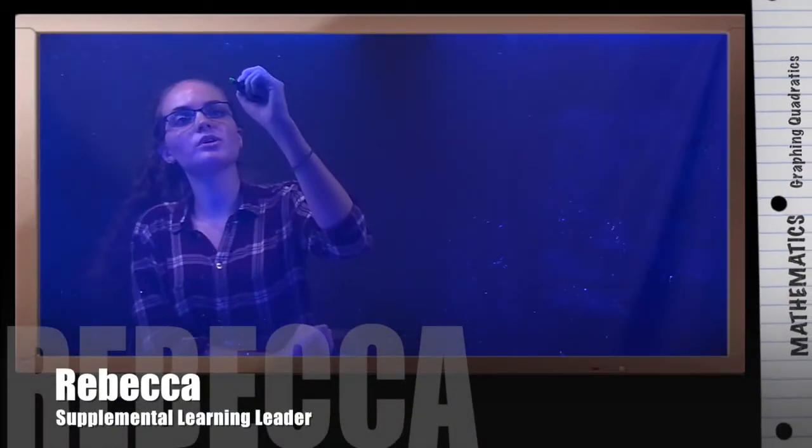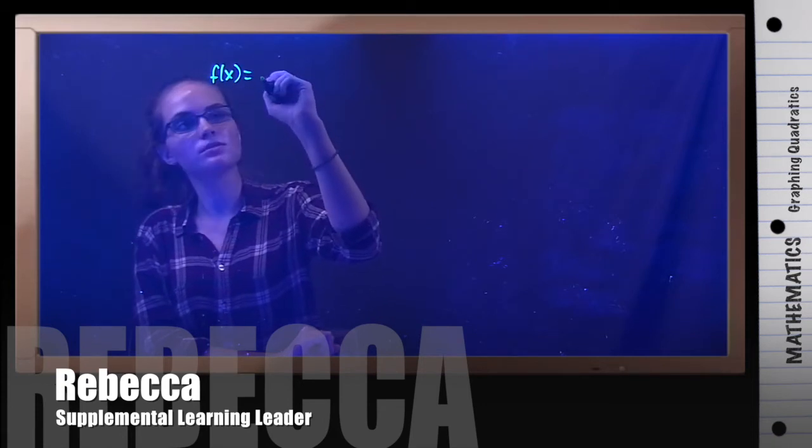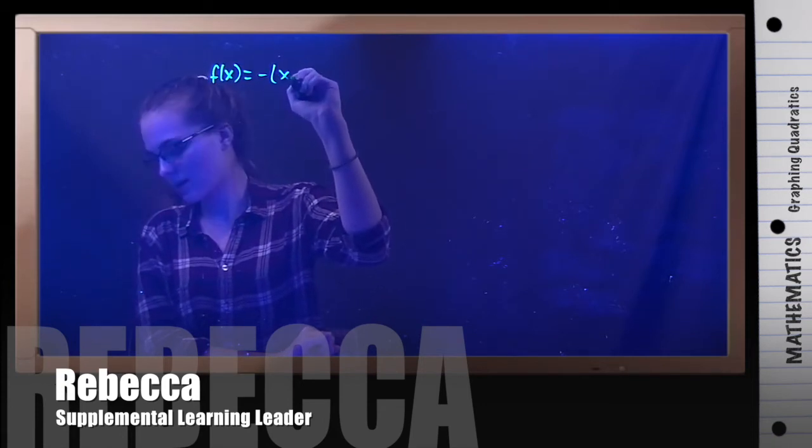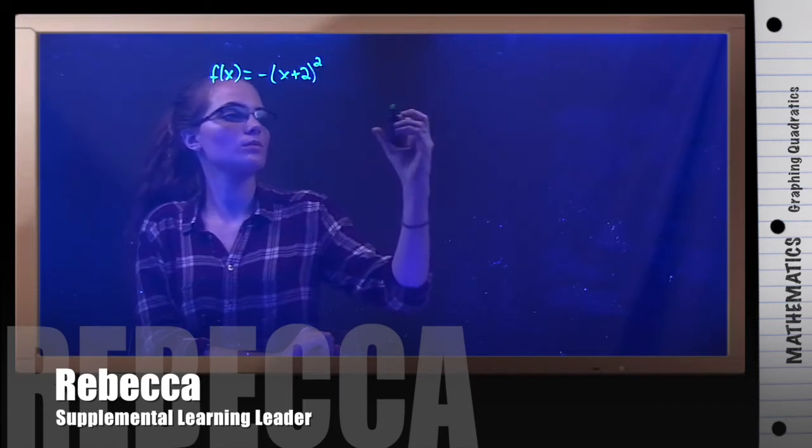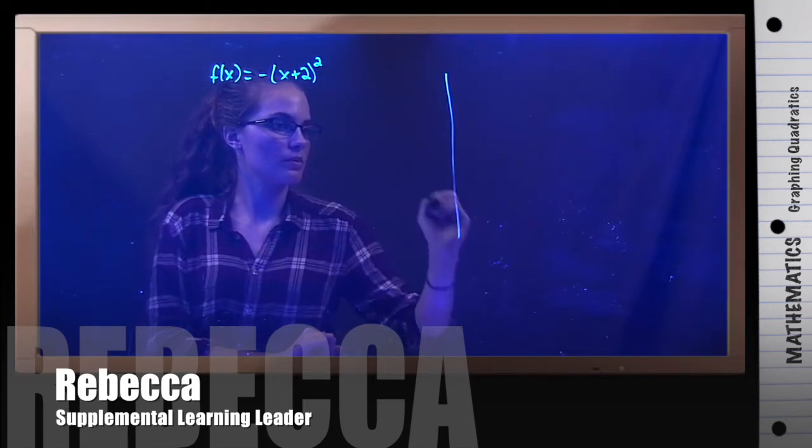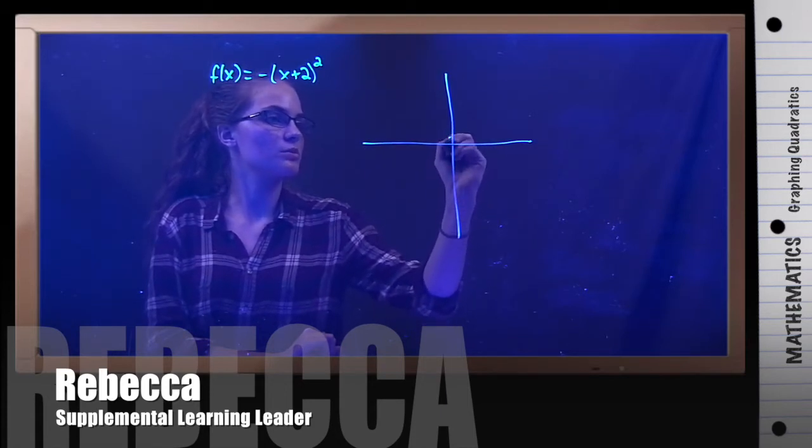For this example, we're going to graph f(x) equals negative (x plus 2) squared. So first I'm going to make my graph with some tick marks.